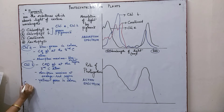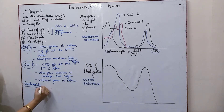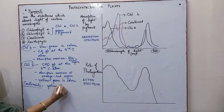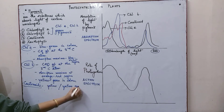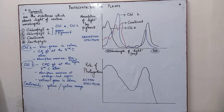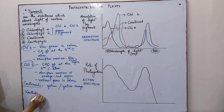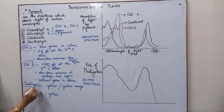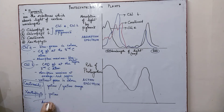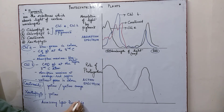Carotenoids are plant pigments which are yellow or yellow-orange and are responsible for bright red, yellow, and orange colors in fruits, leaves, and different parts of the plant. Xanthophylls are also yellow. Both carotenoids and xanthophylls are accessory light-harvesting pigments.